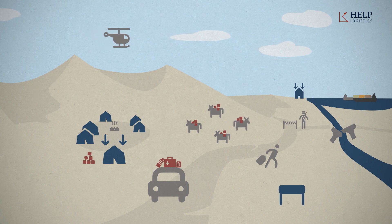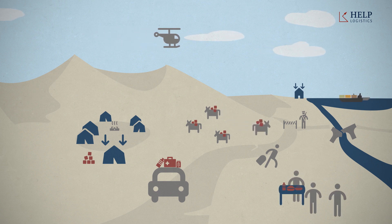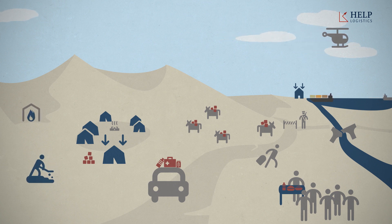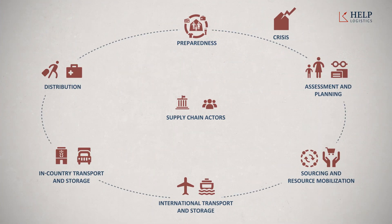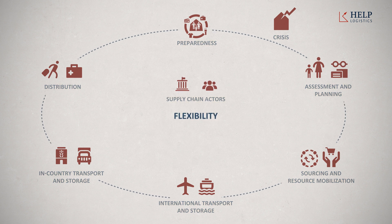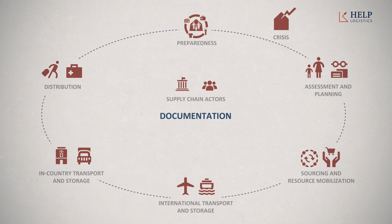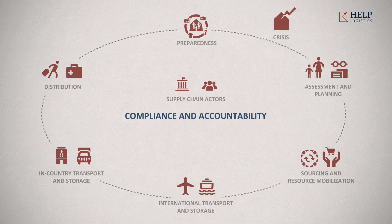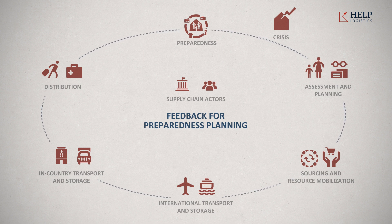Depending on the type of commodity, the situation on the ground, and the frequency of delivery, the final distribution process is established to provide relief items to the affected population. An integral part of supply chain management is also the consideration of how to manage waste, damaged items, and excess stocks. Throughout the operation, and in particular in the early stages of the response, the situation on the ground can change rapidly. While preparedness and planning is crucial, decisions shouldn't be set in stone. The supply chain needs to be designed for flexibility, agility, and mobility. Proper documentation and data collection during the emergency operation, and a comprehensive lesson-learned exercise after the operation, should be performed to ensure compliance with donor accountability and to provide feedback on the preparedness planning for the next emergency crisis.